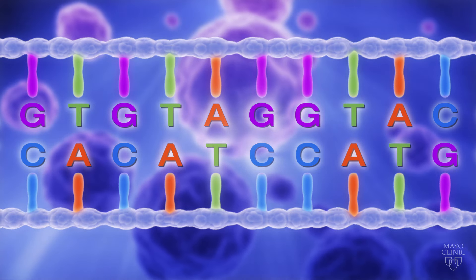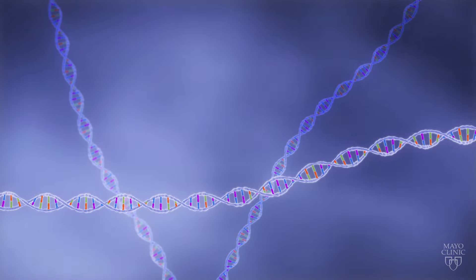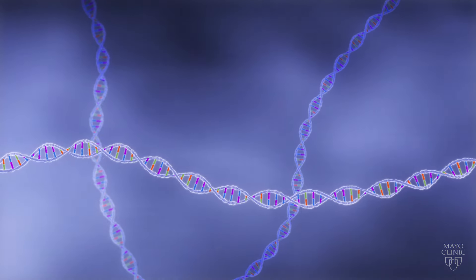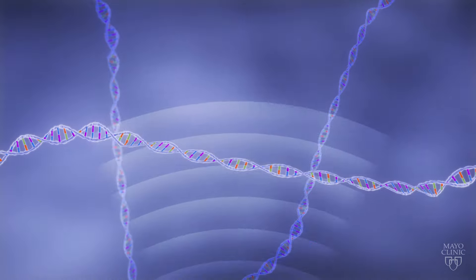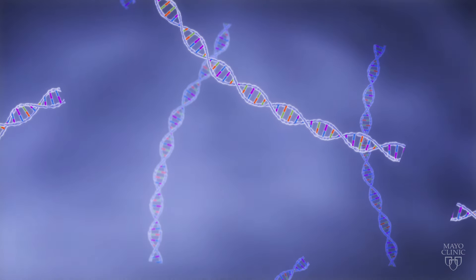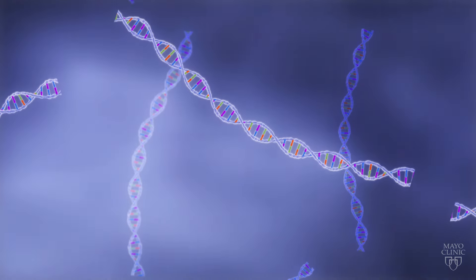To read the sequence of bases in DNA, samples are inserted into a sequencing instrument, where high-frequency sound waves break the DNA into smaller pieces that are only about 600 bases long.